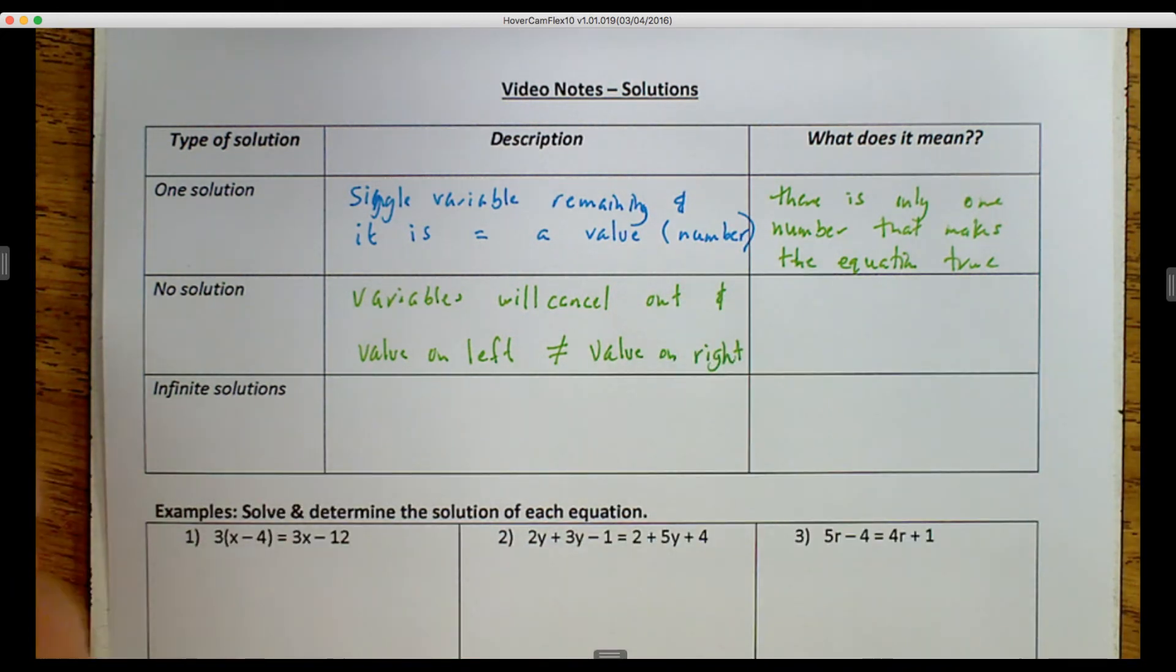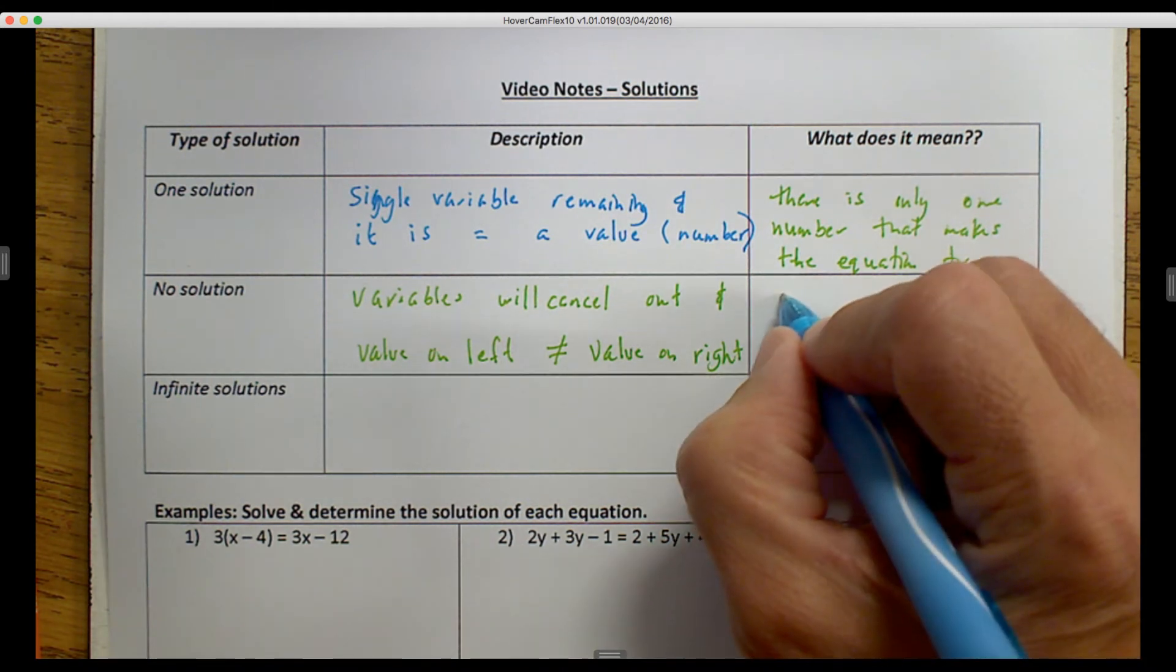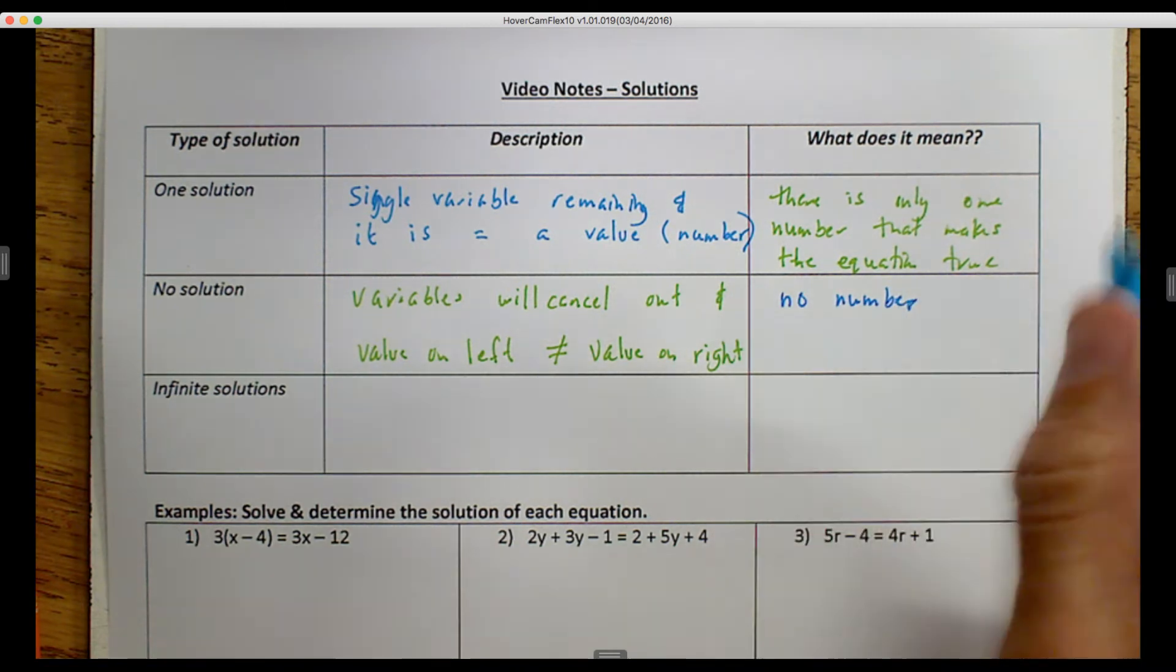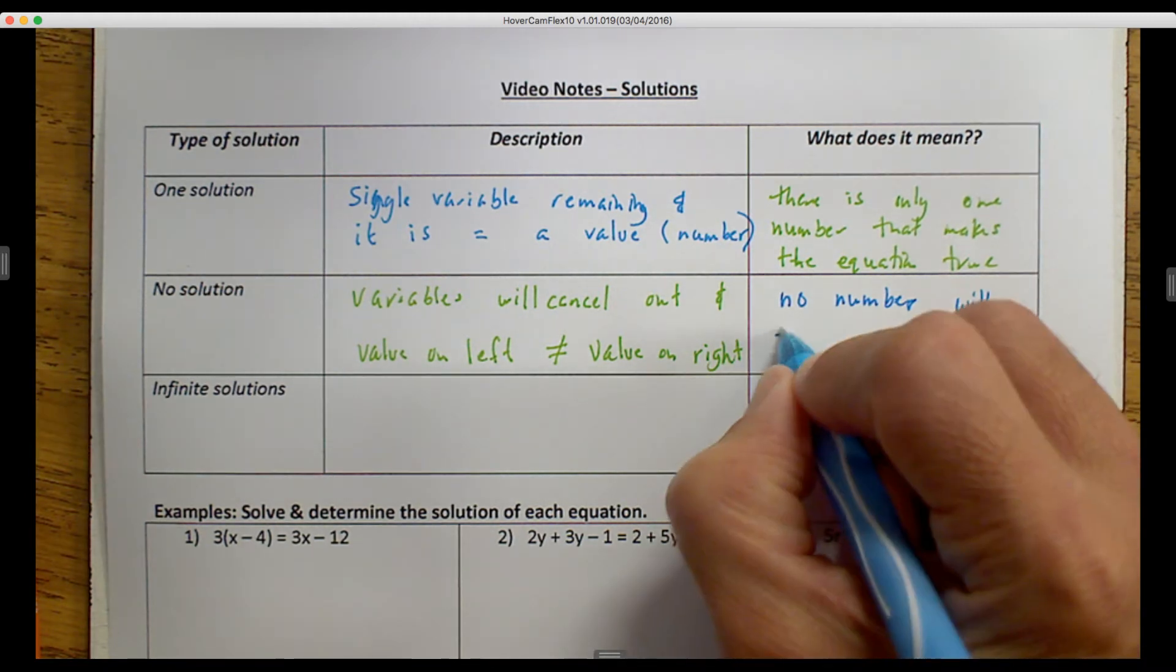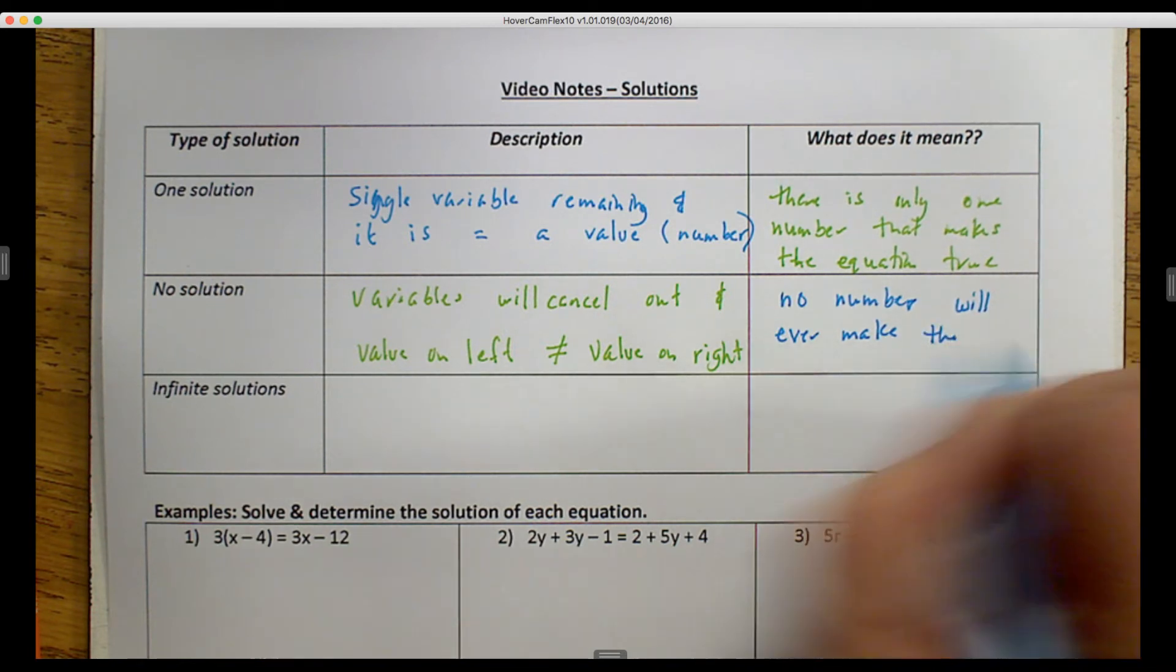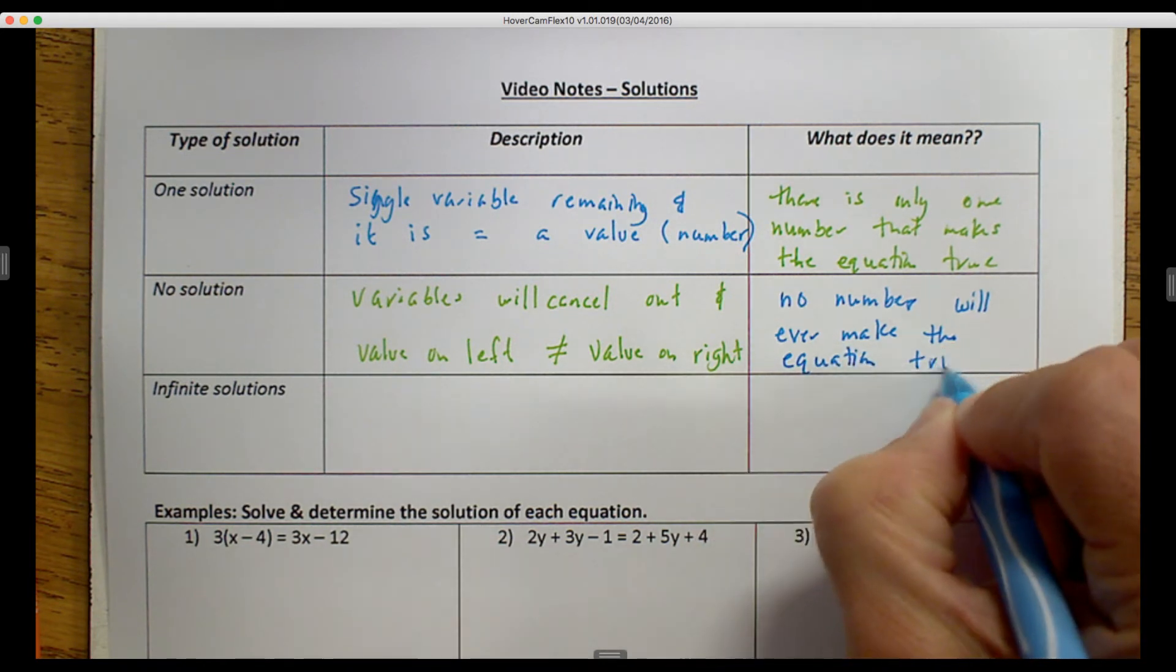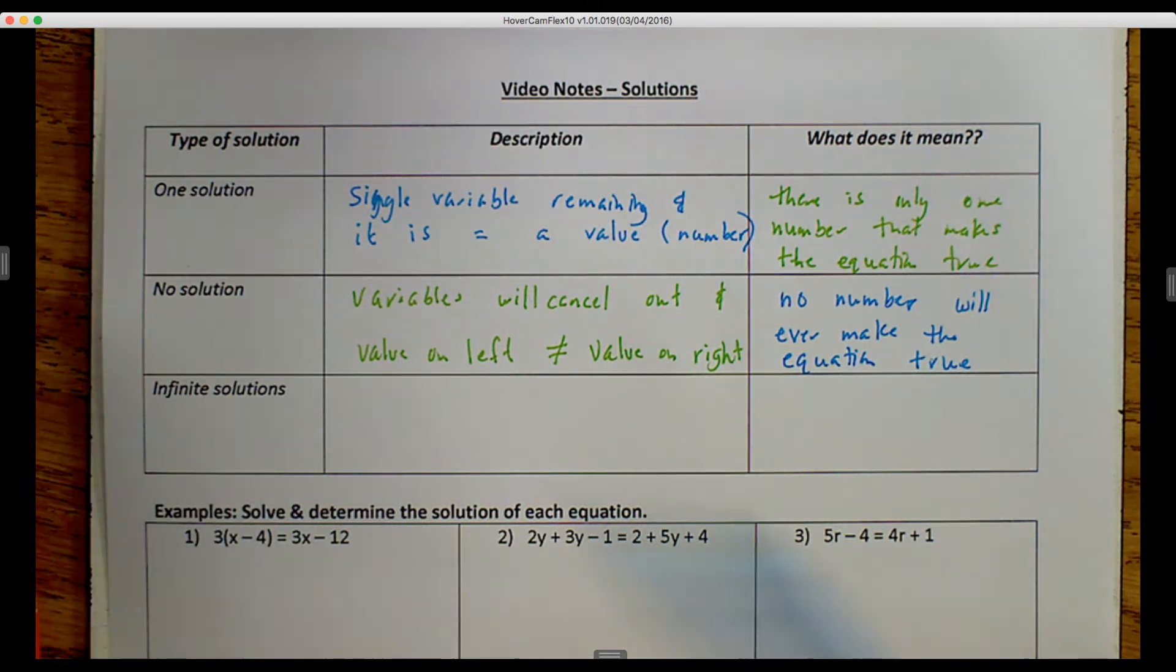Now, what that means is that no number will ever make the equation true. And what I mean by make it true, I mean that it is a true statement, and you'll see this in the examples that we're going to do in a moment.